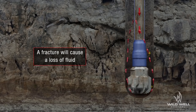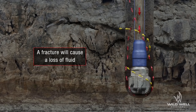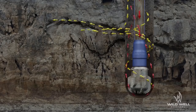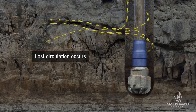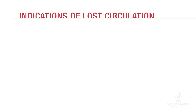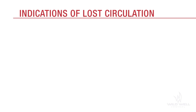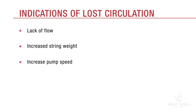A fracture in the formation could lead to a loss of drilling fluid to the formation. Whenever drilling fluid is lost to fractures in the formation, a situation called lost circulation occurs. The most obvious indication of lost circulation is no flow — the flow of drilling fluid across the shakers will stop. Other indications of lost circulation include when the flow indicator decreases to zero, an increase in string weight, or an increase in pump speed if the rig is not equipped with constant speed pumps.